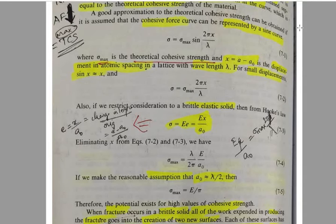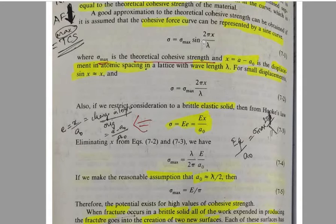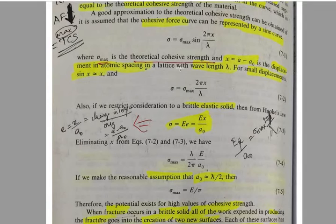A good approximation to the theoretical cohesive strength can be obtained if it is assumed that the cohesive force curve can be represented by a sine curve. So the equation is: sigma = sigma_max · sin(2πx/λ), where sigma_max is the maximum theoretical cohesive strength and x = a − a₀ is the displacement in atomic spacing, with wavelength λ.